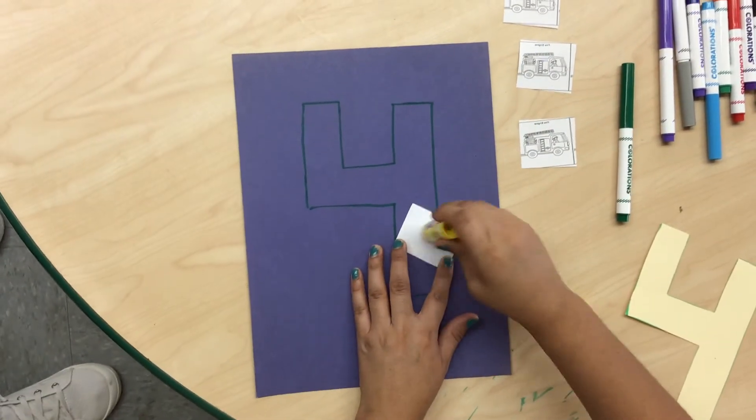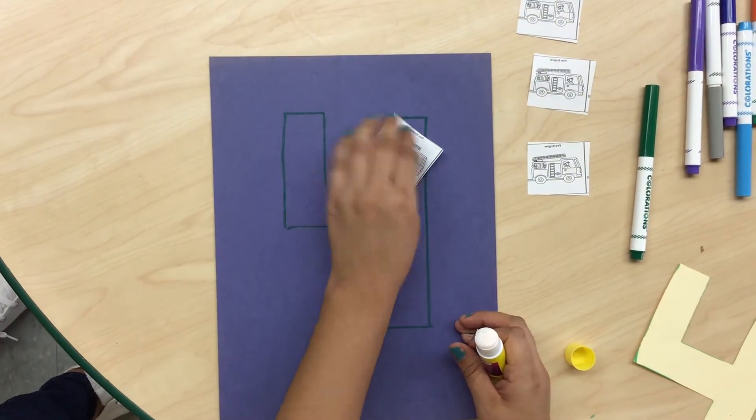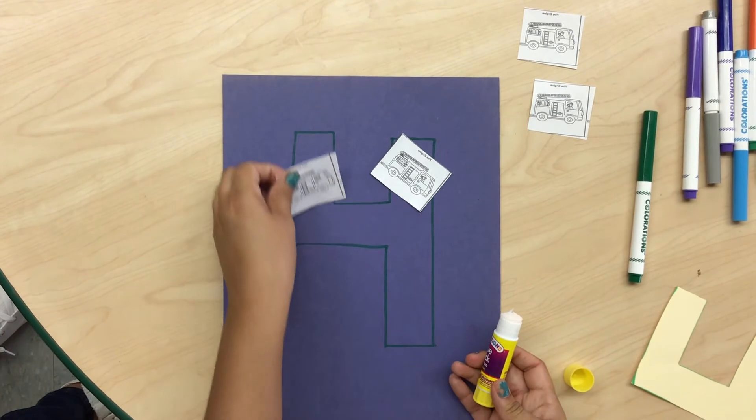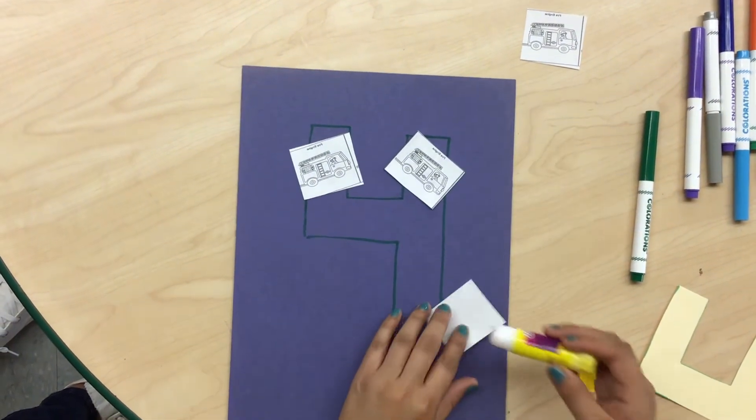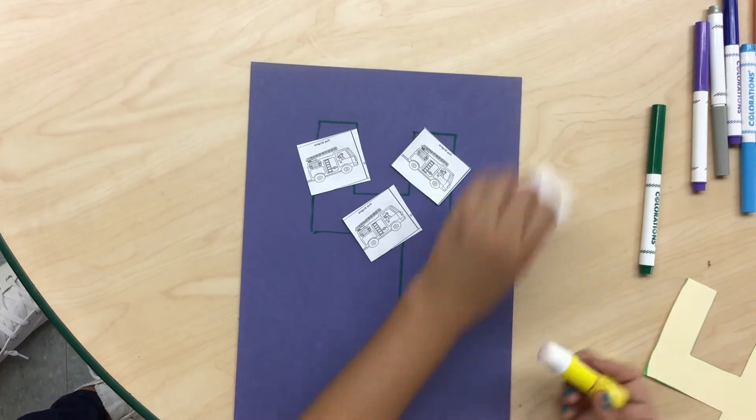You are going to glue the four images of the fire truck over the number four. One, two, three, and four.